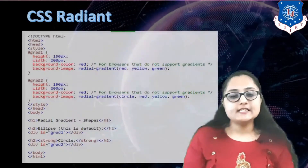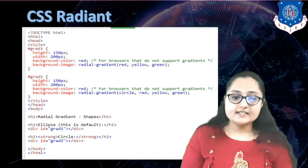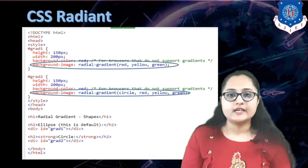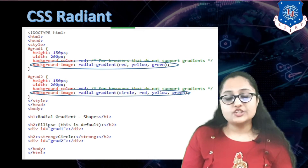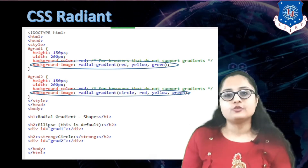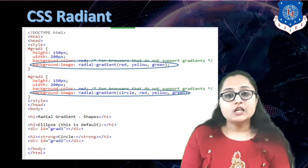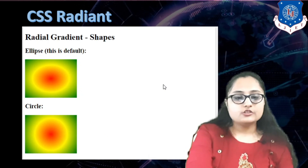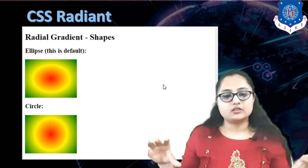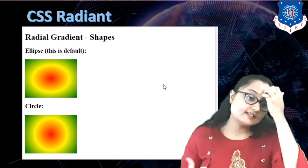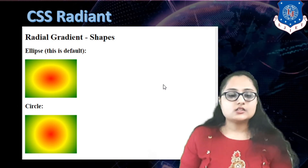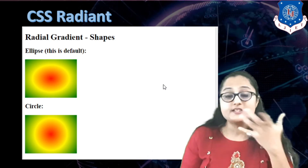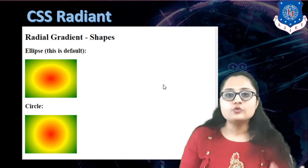The next option in CSS radial gradient is specifying the shape. By default the shape is ellipse. If you want to explicitly change the shape you can specify circle. Here you can see the difference: the first example has a slightly oval or ellipse shape, whereas the second one is a circle. So by default, if you do not specify the shape, it takes ellipse; if you explicitly specify circle, it will display a circle.